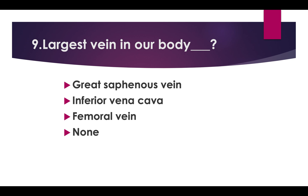Largest vein in our body. Options: Great Saphenous vein, Inferior vena cava, Femoral vein, None of these. Correct answer is Inferior vena cava. The longest vein in our body is the Great Saphenous vein, also known as the Long Saphenous vein.